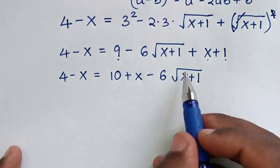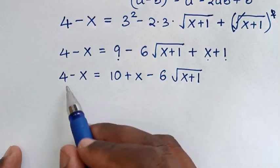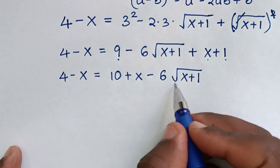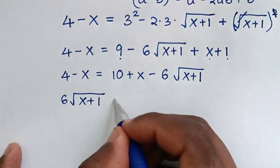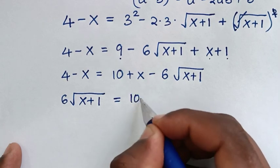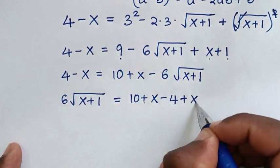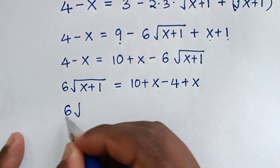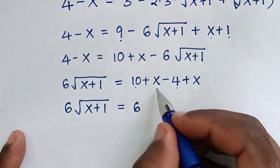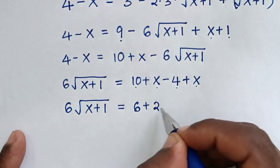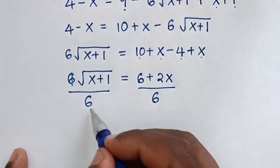We move the negative 6 square root of (x plus 1) term to the left side, making it positive: 6 square root of (x plus 1). We also move x to the left side. So 6 square root of (x plus 1) equals 10 minus 4 plus 2x, which gives 6 plus 2x.